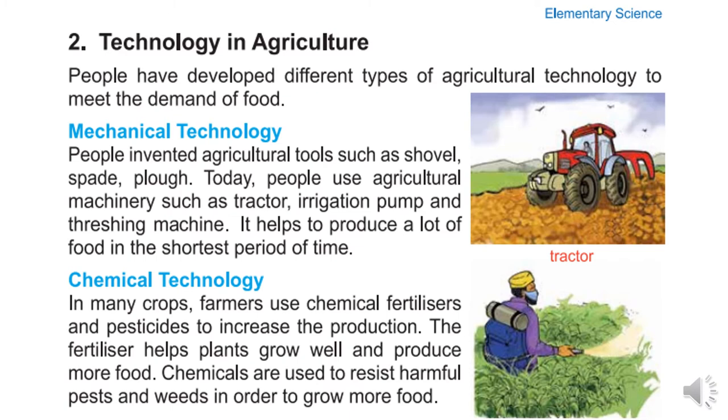Chemicals are used to resist harmful pests and weeds in order to grow more food.